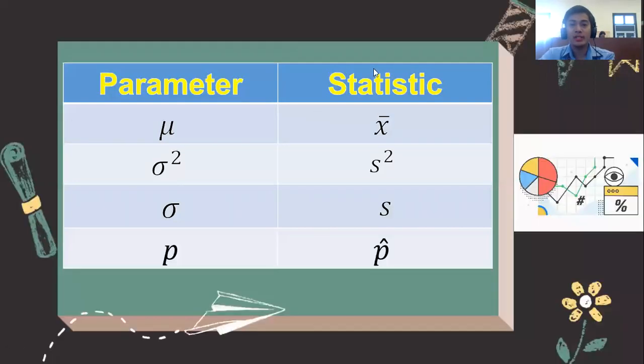For statistics, we use the symbol x̄, which describes the sample mean. s² is the sample variance, s is the sample standard deviation, and p̂ is the sample proportion. We can also use lowercase n to represent the sample size.